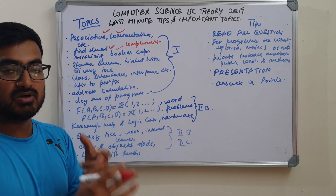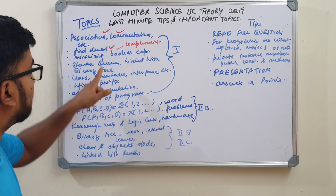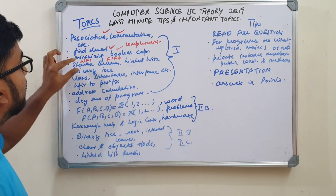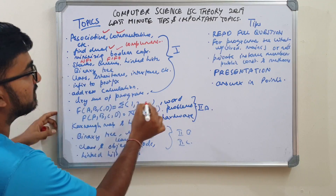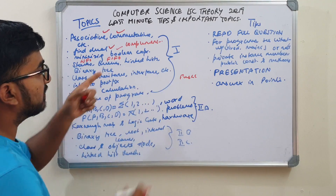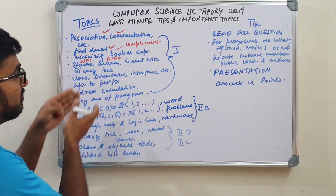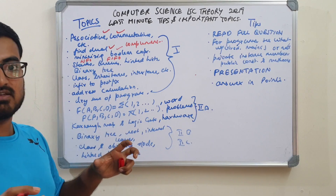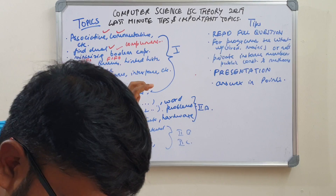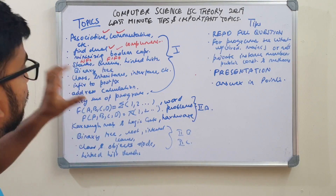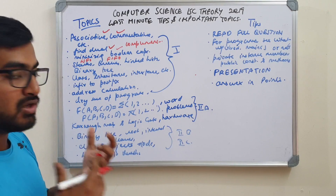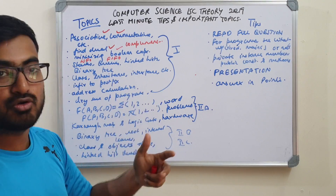When answering theory questions, look for keywords because that's what checkers look for. For example, stack follows last-in-first-out and queue follows first-in-first-out. You can list five operations like push and pop and show how they behave in a queue versus a stack. But do not excessively answer — these questions are likely only one or two marks, so make sure your content is concise. Two concrete points should earn two marks.